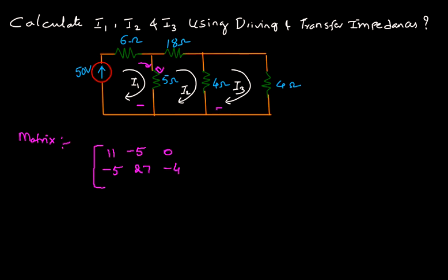For the third loop and the first loop, there is no common resistor, so we write 0. For the second and third loops, we write minus 4. For the third loop only, you add 4 and 4, which gives 8.